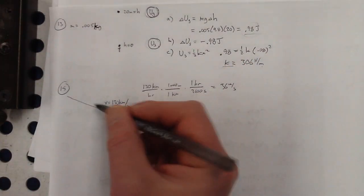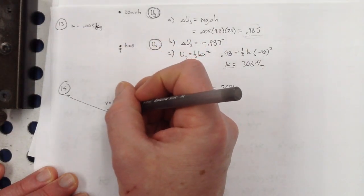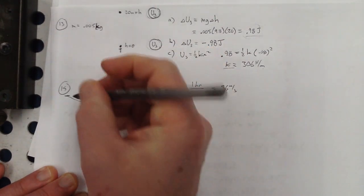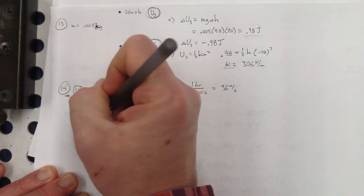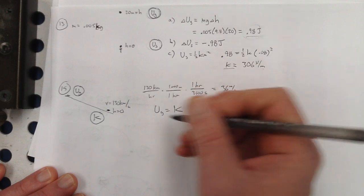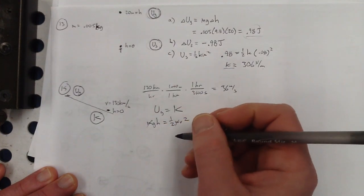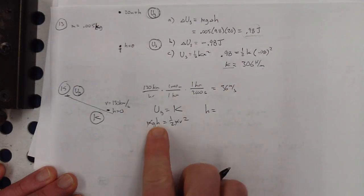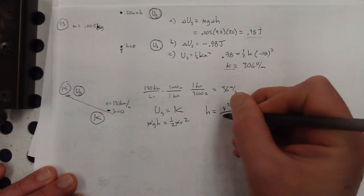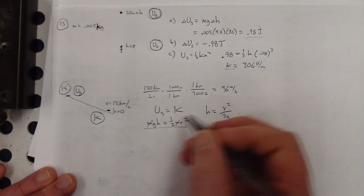The truck gets to the bottom of the ramp going 36 m/s, then goes up the ramp. Taking the bottom as height zero, I have all kinetic energy at the bottom and all gravitational potential at the top. So: MGH equals one-half MV squared. Mass doesn't matter — it cancels. The height equals V squared over 2g. I wouldn't expect you to memorize that expression — know how to derive it with algebra.